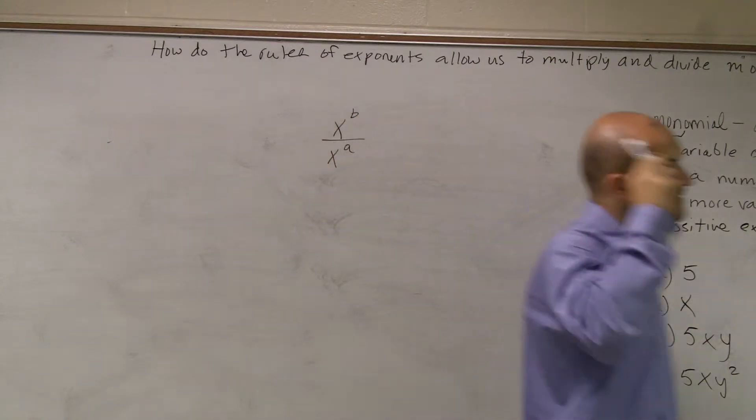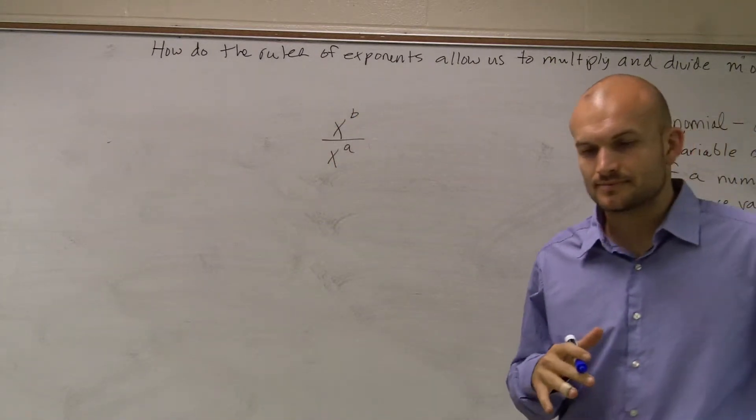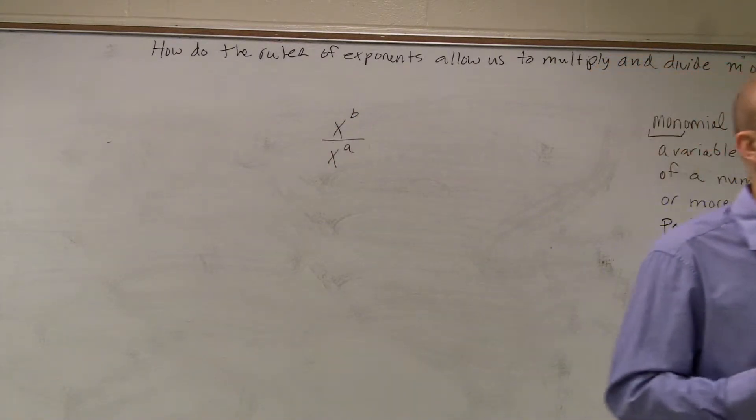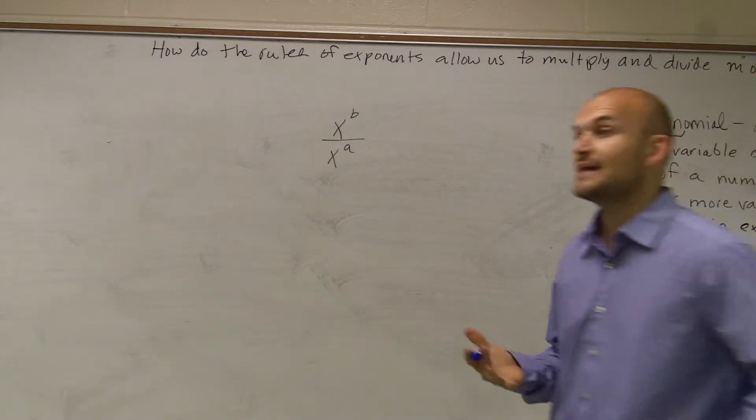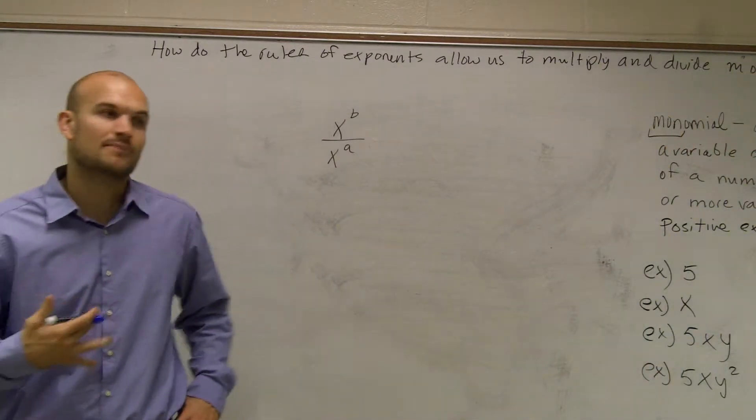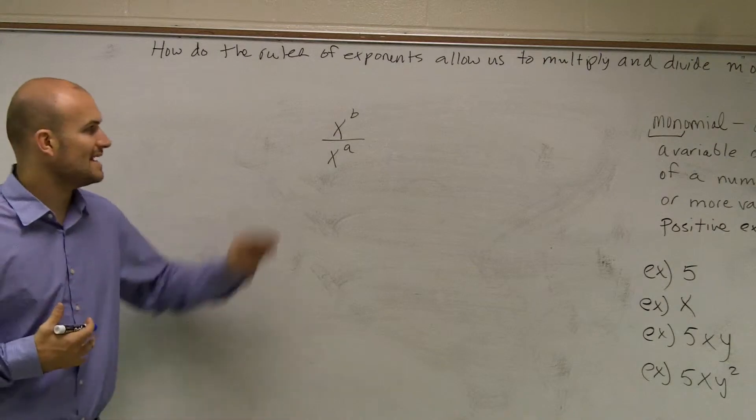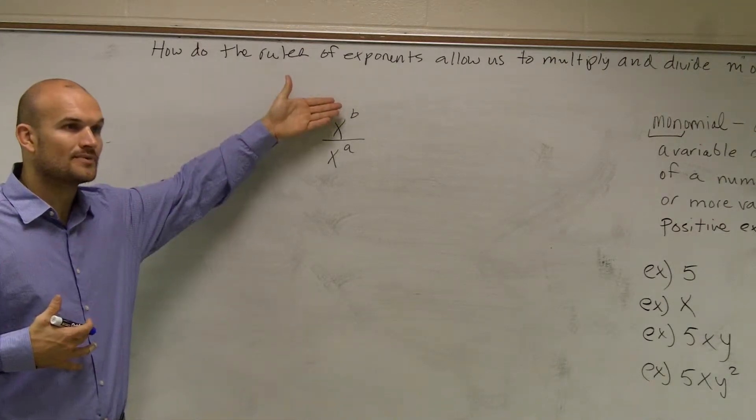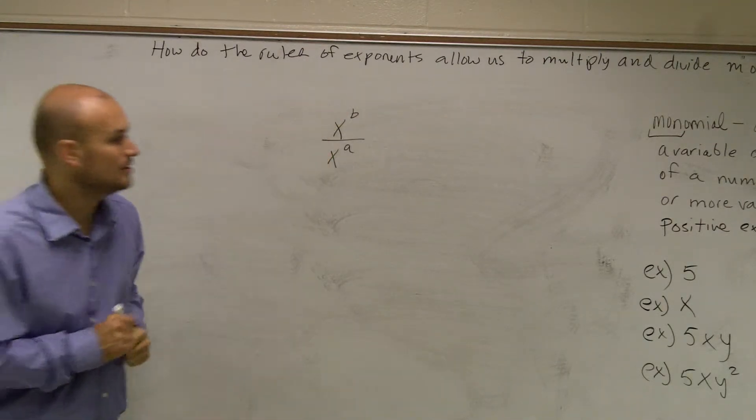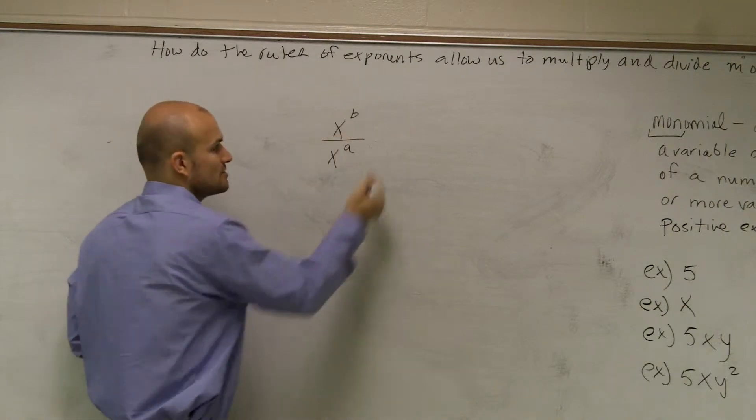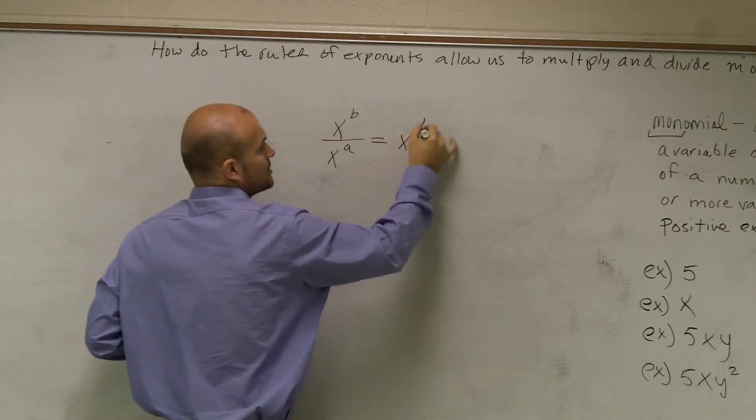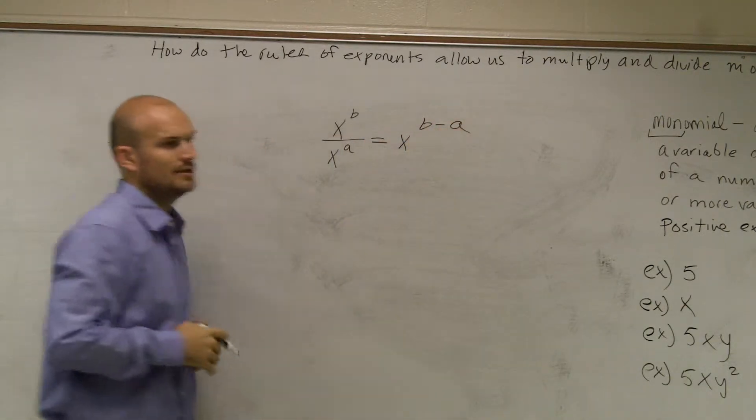So I'm writing up a rule up here, and this is our rule for dividing. So what this allows us to do is to divide monomials. And I already explained what a monomial is. So what it states is, when we have a monomial divided by another monomial, when they have their exponents, what do we do with the exponents? What we're going to do is we're going to subtract the exponents.